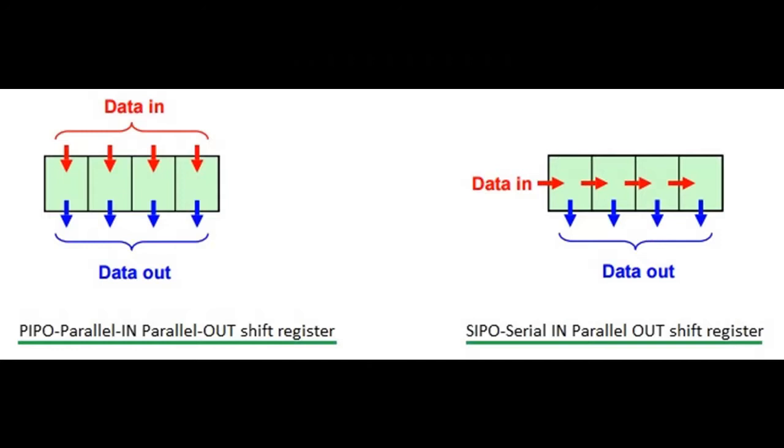One of the advantages of using a SIPO shift register is that it requires less input signals to send data to it. You need one data signal, one clock signal, one latch signal that basically replaces the set signal.